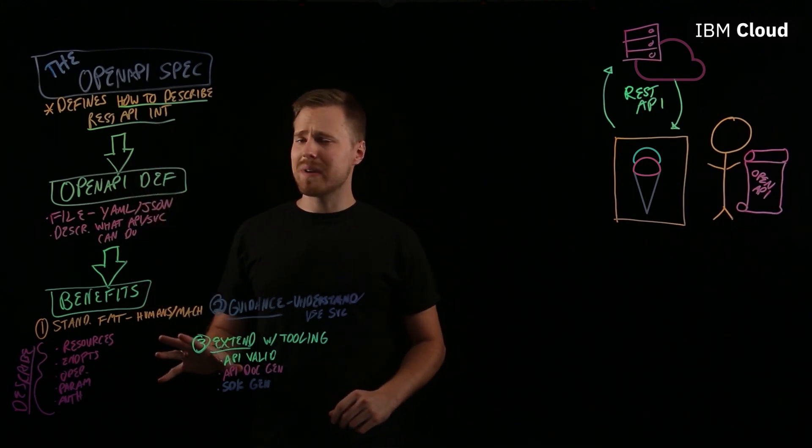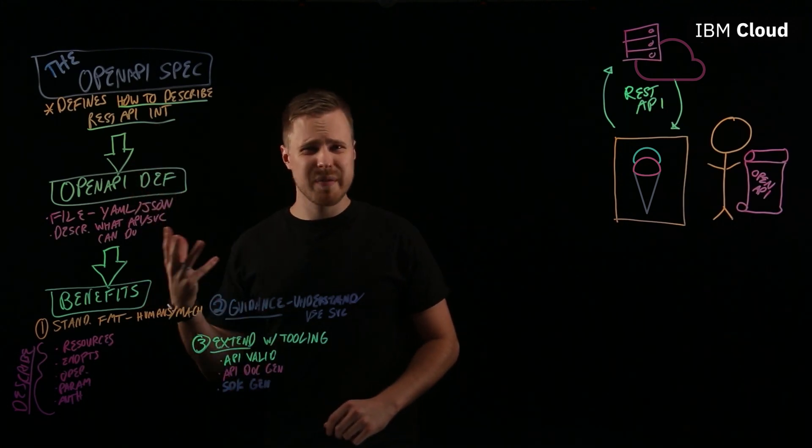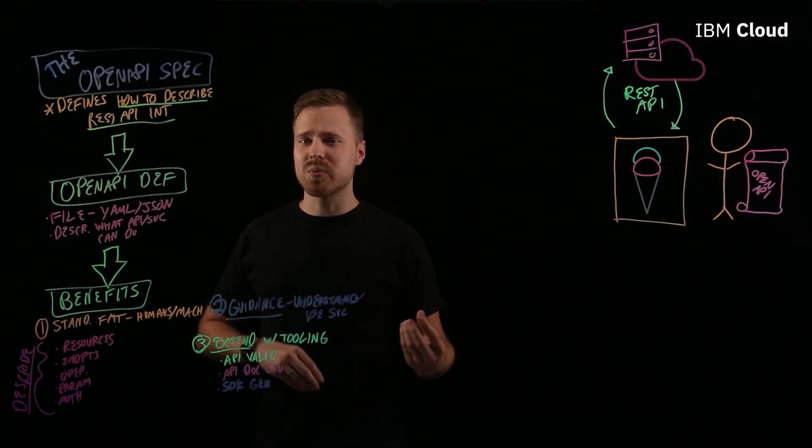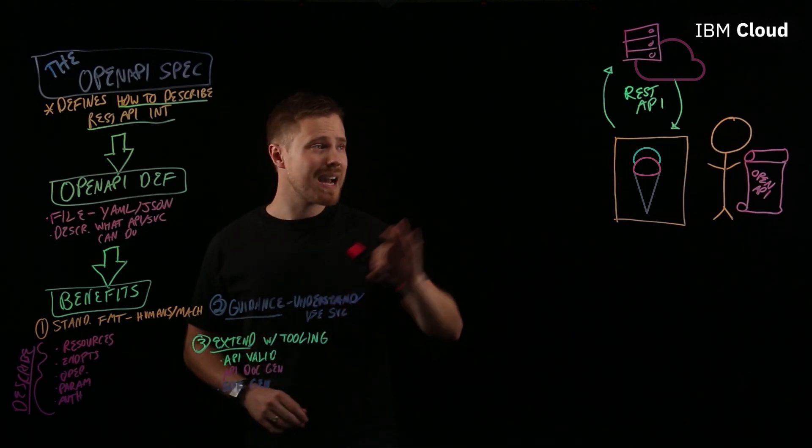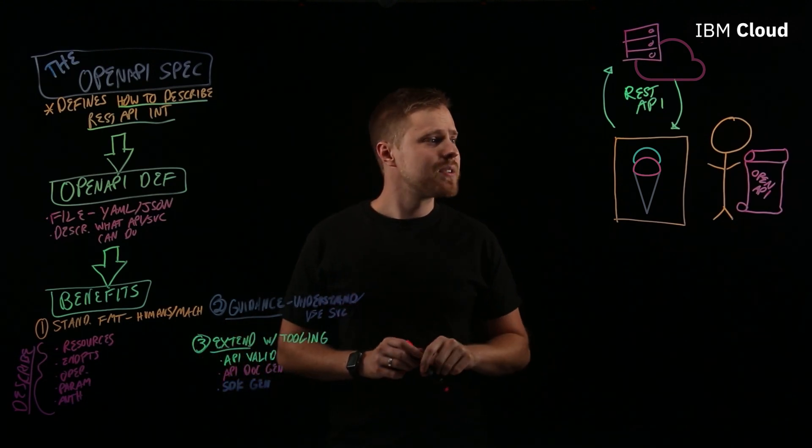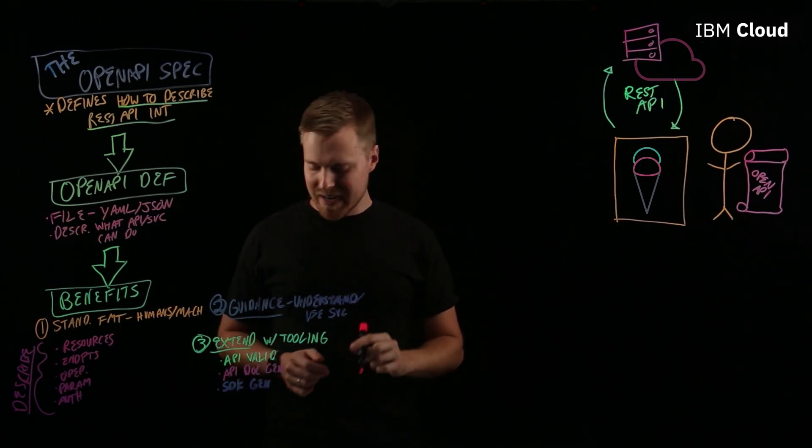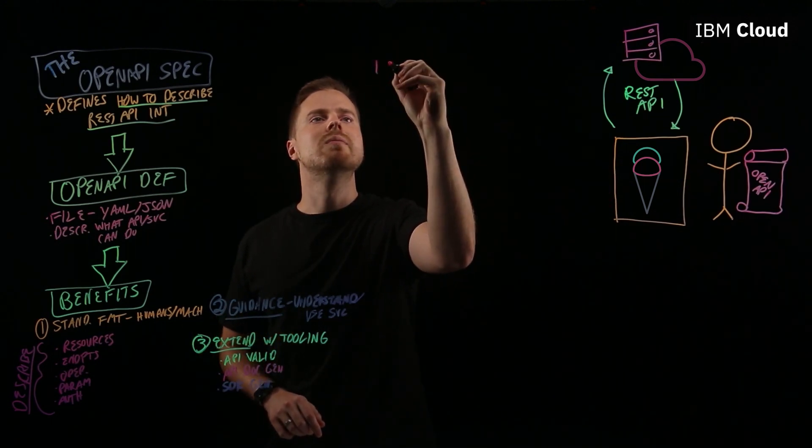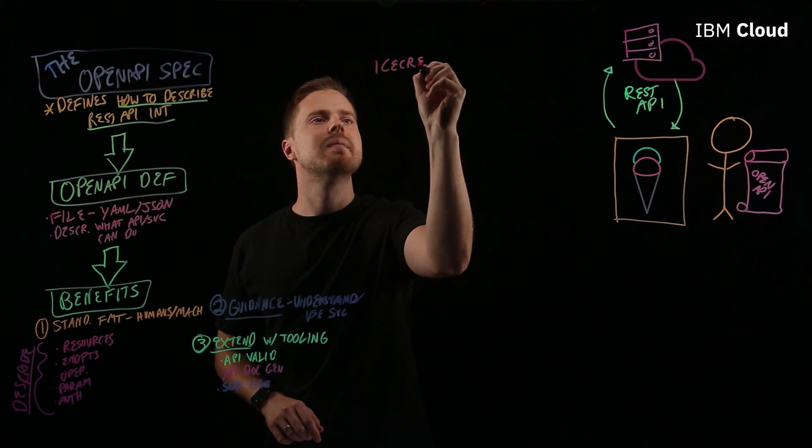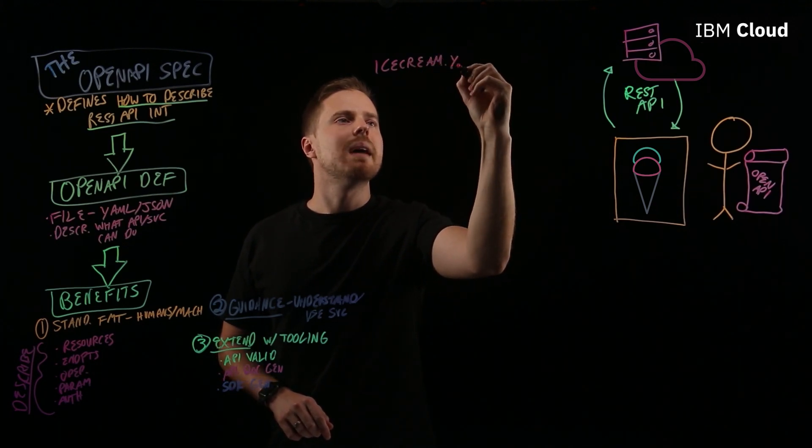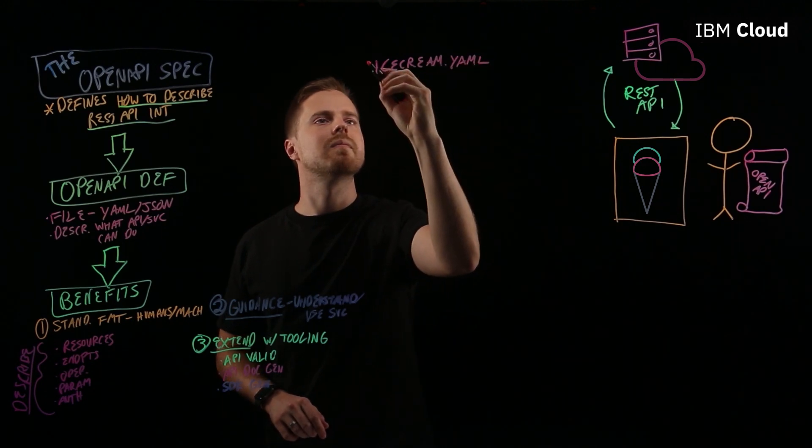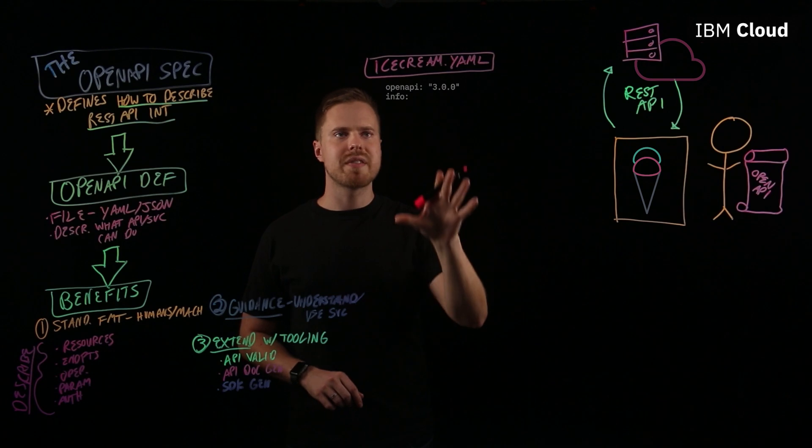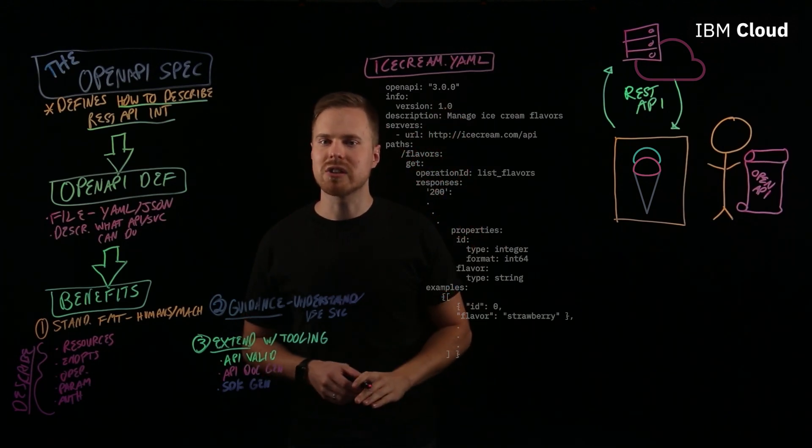Great! So, that kind of outlines what OpenAPI is, some of the benefits, and how OpenAPI is used with REST APIs. So, let's talk about our example. Mark, when he's looking at this OpenAPI definition, we'll say that this is called ice cream dot yaml.